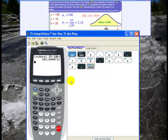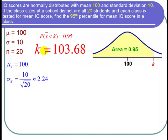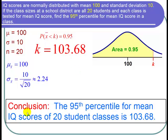So now let's go back to the PowerPoint. Okay, so the calculator gave us K was equal to 103.68, and that's the 95th percentile. So now we can state our conclusion. We can conclude that the 95th percentile for mean IQ scores of 20 student classes is about 103.68. And I'm done with the problem.